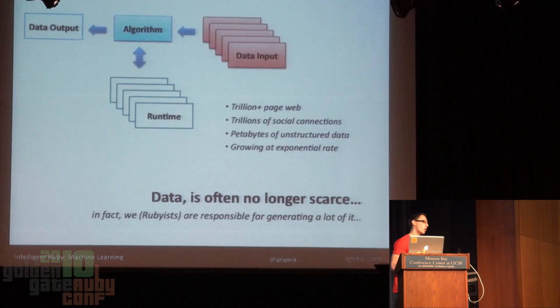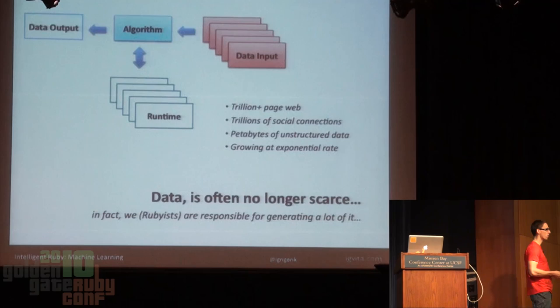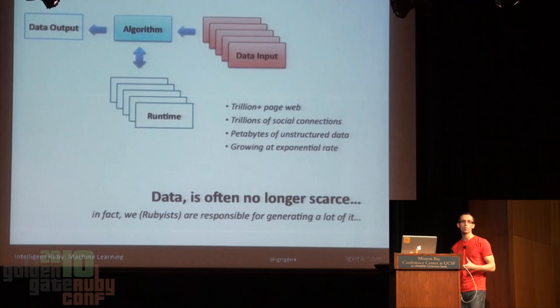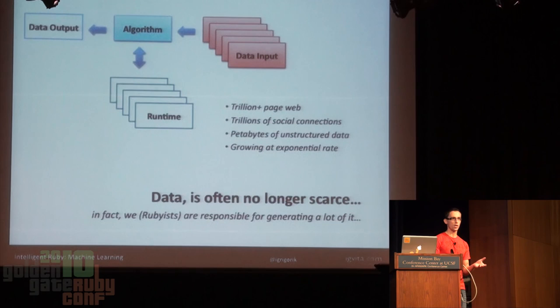The second consideration is the data input. Up until very recently, data input has been largely scarce — you could not get your hands on a lot of data. If you look at natural language processing or any other domain, researchers have been working on data sets with millions of files, whereas today we have trillions of pages on the web. And in fact, we — the Rubyists — are responsible for building a lot of the applications generating terabytes and terabytes of unstructured and structured data.